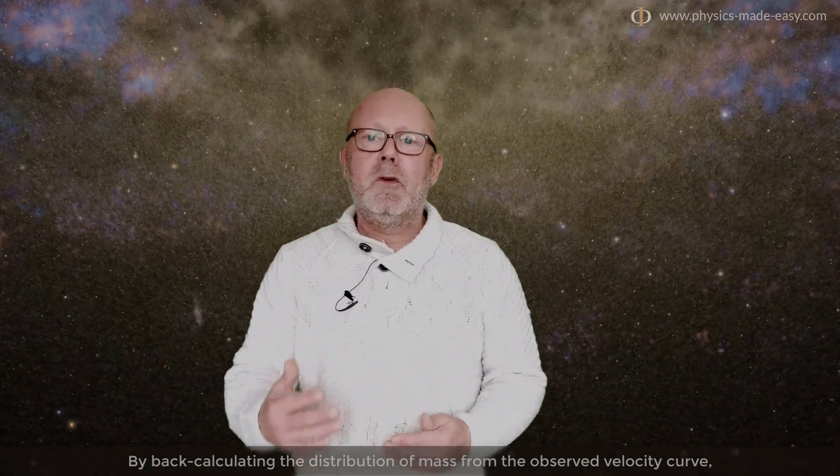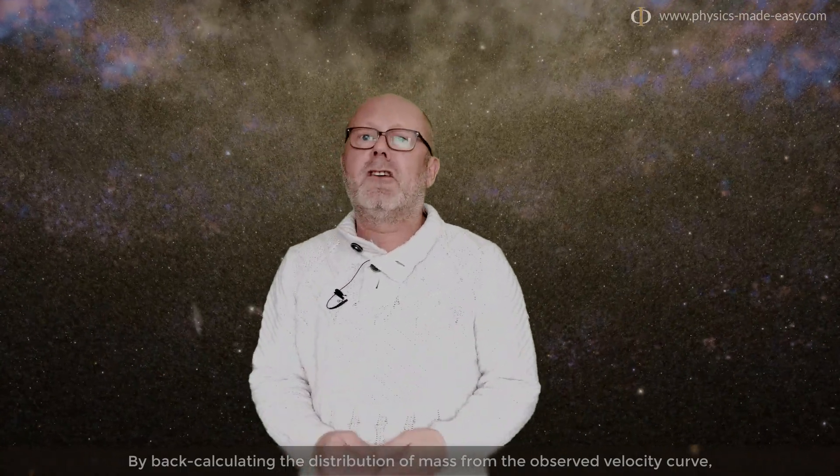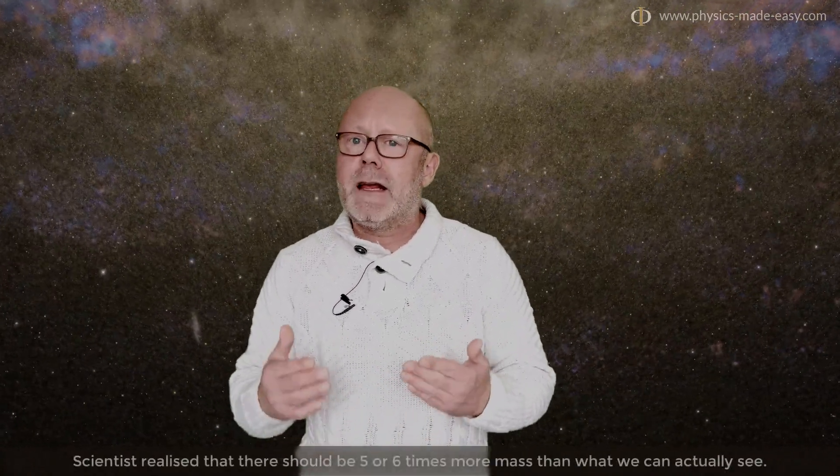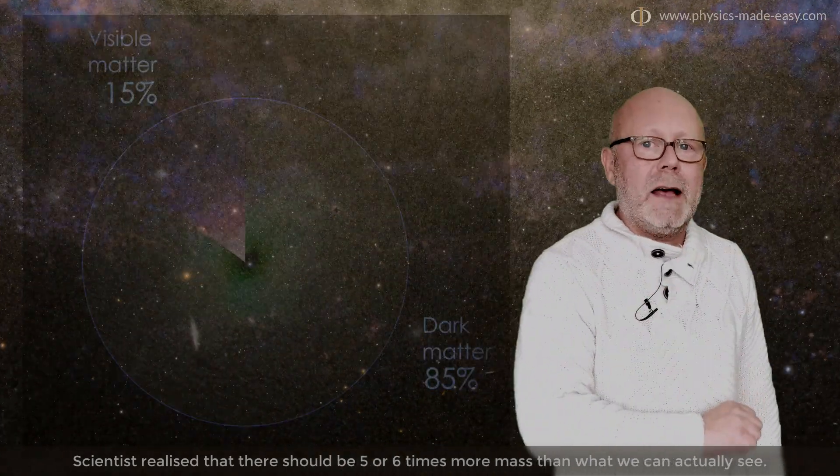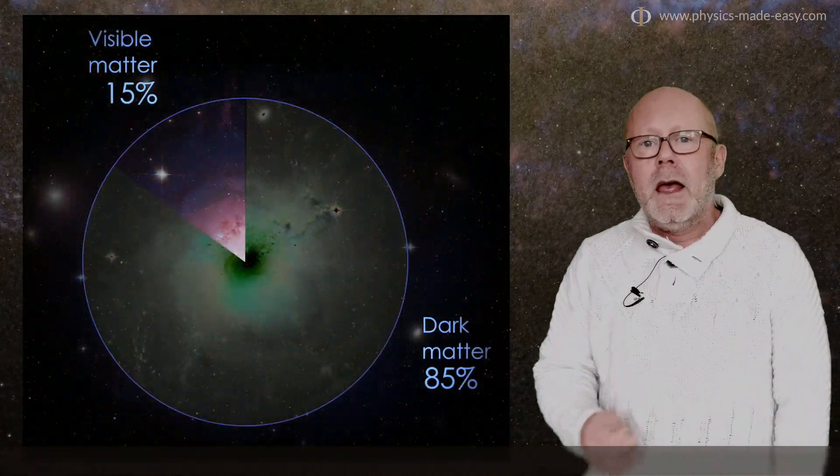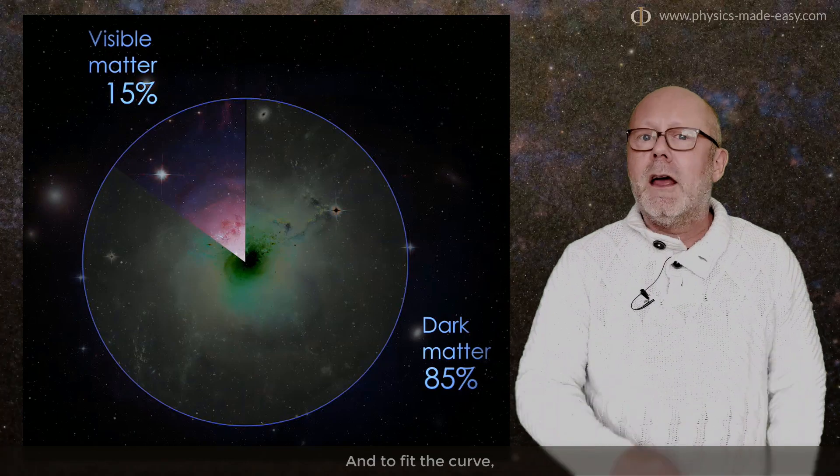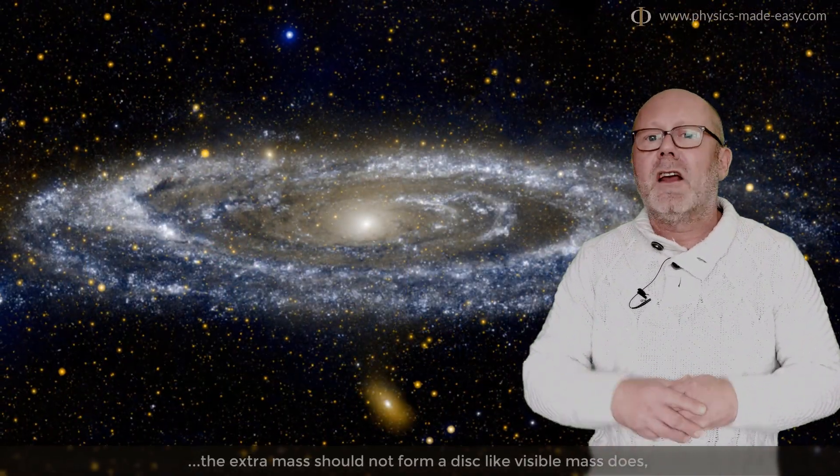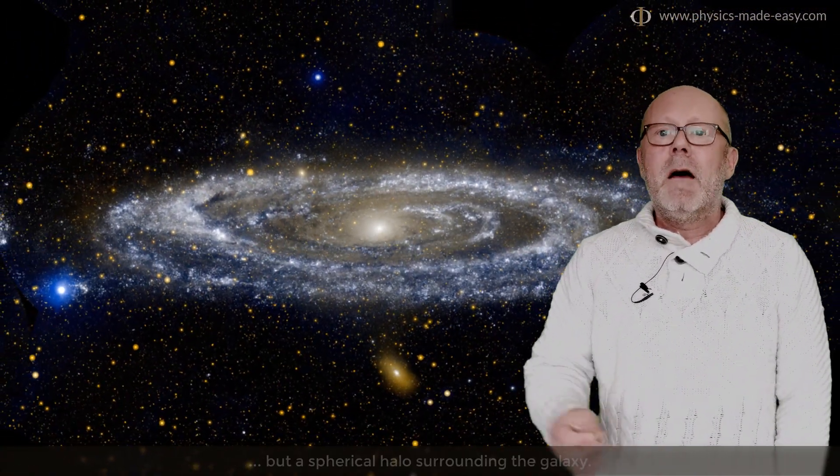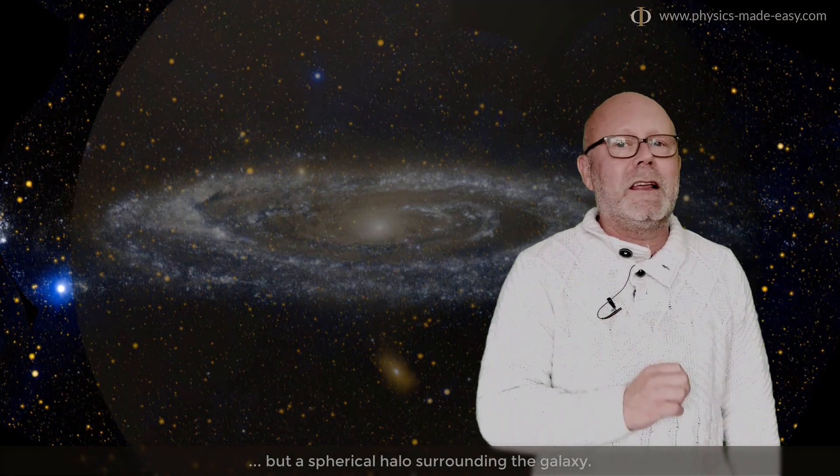By back-calculating the distribution of mass from the observed velocity curve, scientists realize that there should be five times more mass than what we actually see. And to fit the curve, the extra mass should not form a disk like visible mass does, but a spherical halo surrounding the galaxy.